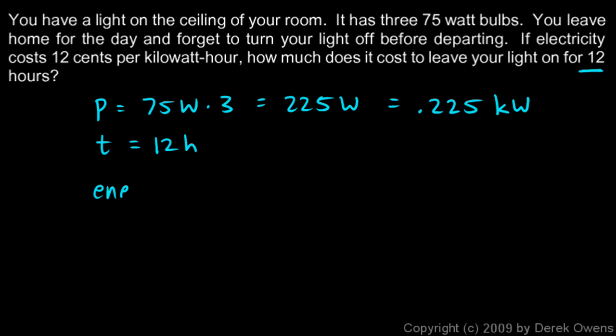So we can calculate the amount of energy that's used while we're gone for 12 hours. It's .225 kilowatts times 12 hours, and so we multiply .225 times 12, and we end up with 2.7, and you see the units there, kilowatt hours.